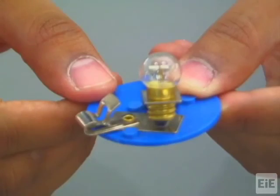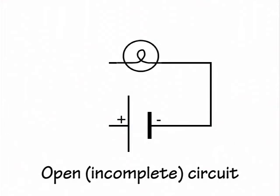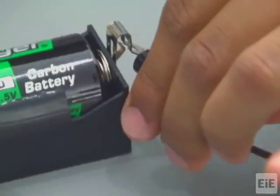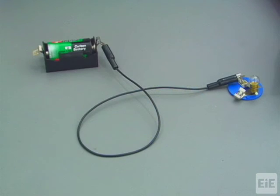An open or incomplete circuit occurs when current is unable to flow out of the battery and back. Here, the circuit is incomplete because the negative pole of the battery is wired to the bulb but the positive pole is not, and so the bulb does not light.